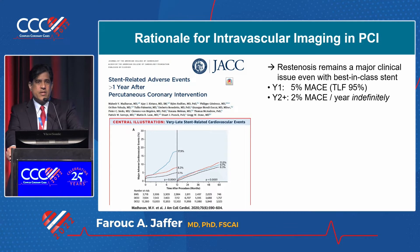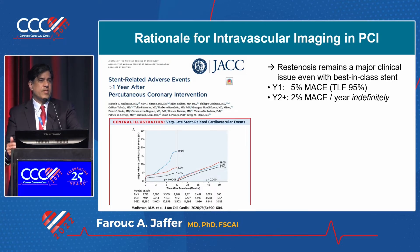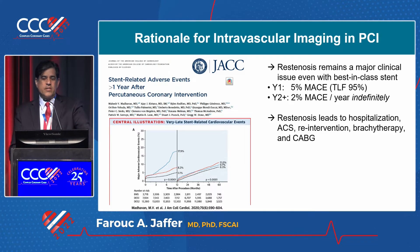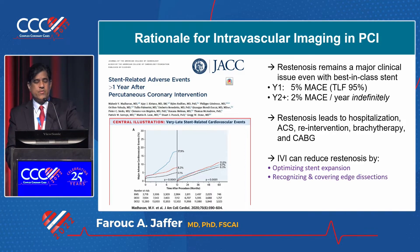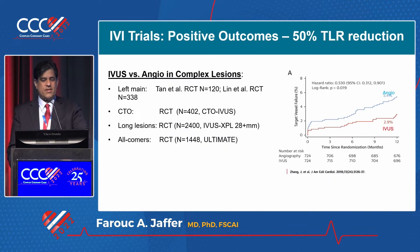The baseline motivation is that we are still limited by restenosis. Despite fantastic acute results, we still have significant MACE rates in year one and then about two percent per year every year thereafter, even in the modern DES era. Restenosis leads to hospitalization, acute coronary syndromes, re-intervention, and bypass. Our best technique for reducing restenosis is doing a great job at the time of PCI — optimizing stent expansion, covering significant dissections, and avoiding high plaque burden areas.